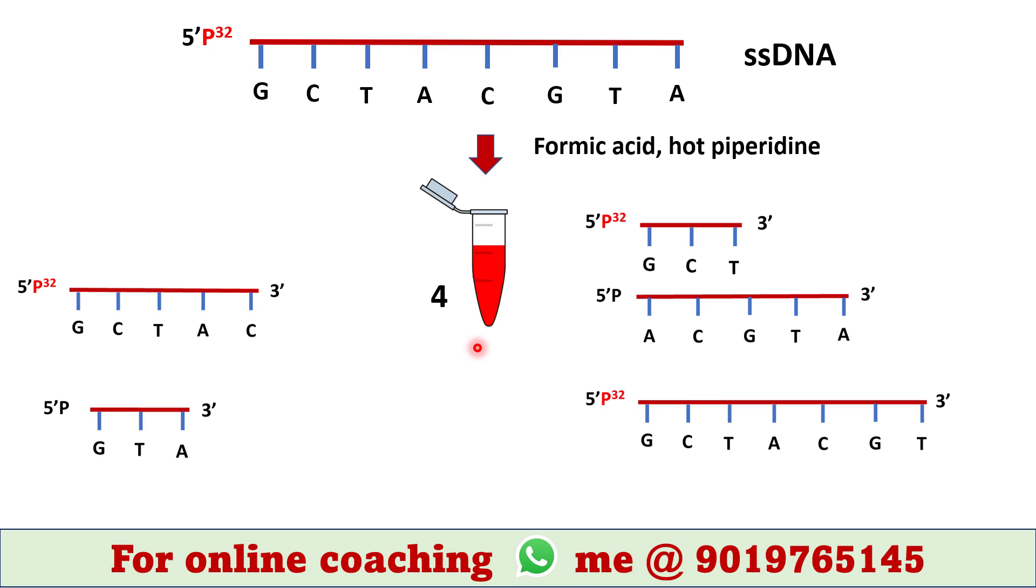In tube 4, we have formic acid and hot piperidine. These chemicals cleave DNA sequence at adenine as well as guanine. Hence, following fragments are generated in tube 4.